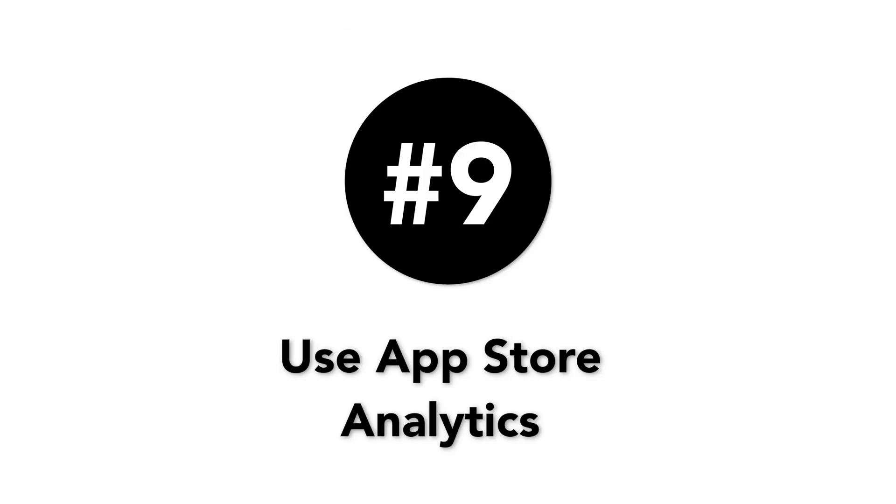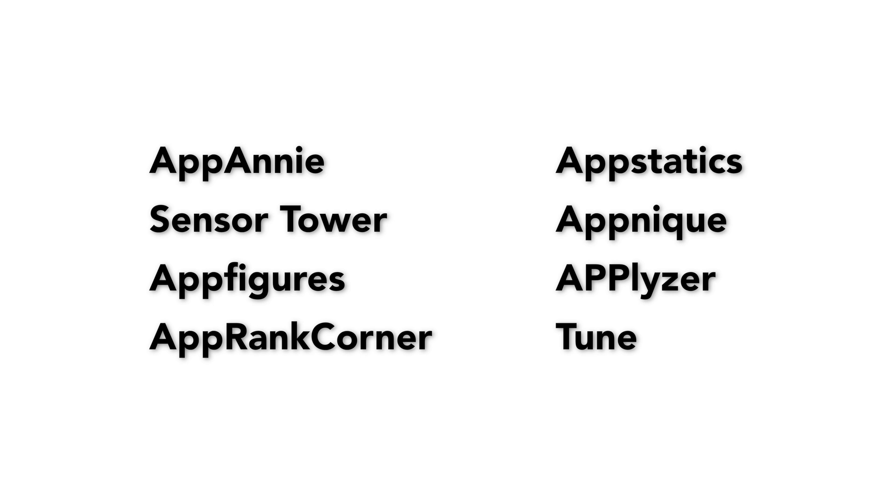Or you can use push notifications to encourage users to review your app. Number 9: Use app store analytics. Just like Google Analytics for web page marketing, there are a number of powerful app store analytic tools that are designed to help your mobile marketing strategy. They will show you where your app stands in relation to your competition, and you can use this data to make updates and boost your store ranking accordingly.